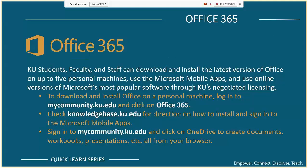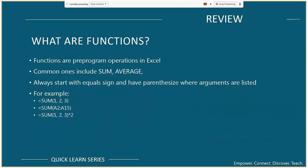Before we get started: students, faculty, and staff can download and install the latest version of Office on up to five personal machines through KU's negotiated licensing. To access those downloads, log into mycommunity.ku.edu and click on the Office 365 link. That same licensing allows use of Microsoft mobile apps, and through OneDrive in mycommunity you can create Excel spreadsheets and workbooks directly from the browser — all grouped under Office 365.